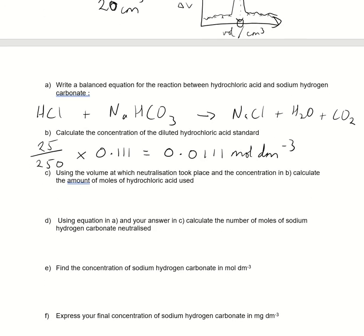So this was the concentration of the HCl that we used in the second practical. Now, using the volume at which neutralization took place, calculate the amount of moles of hydrochloric acid used. So this is a solution, so n equals CV, concentration we've just got there, times the volume I just picked out off the top of my head, just said 20. So, if we get calculators for that, 0.0111 times 20 over 1,000. And we get 2.22 times 10 to the minus 4 there.